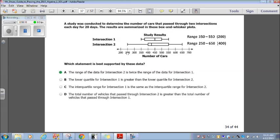That's the range for intersection one. Let's look at intersection two. Looks like it ranges from 250 to 650. So 250 to 650 is 400. Well, that is double the range. The range doubles for intersection two than intersection one. So A, that's our answer. Boom. That was easy.